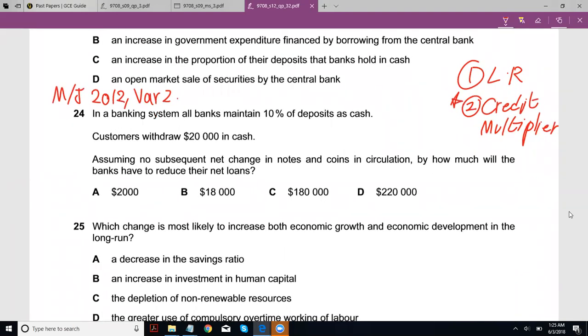So let's look at this. It says in a banking system all banks maintain 10% of deposits as cash, which is kind of like your liquidity ratio. So if you get a deposit of, let's say, 100 dollars, it will loan out 90 dollars and keep 10 dollars as cash.